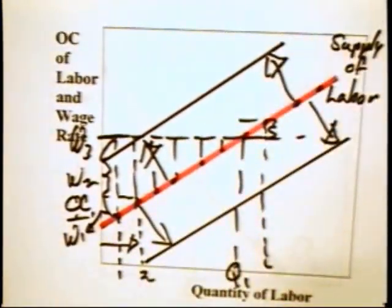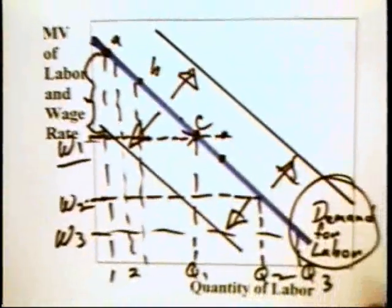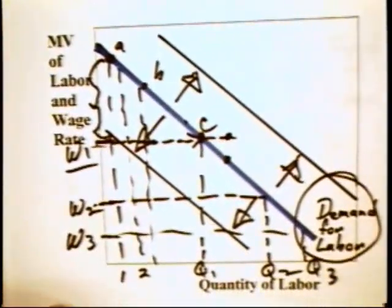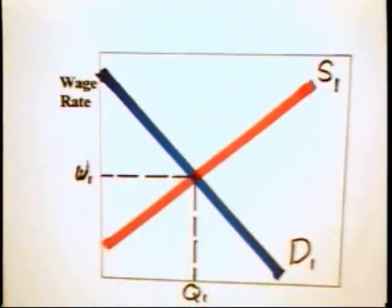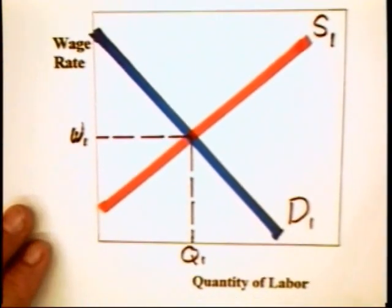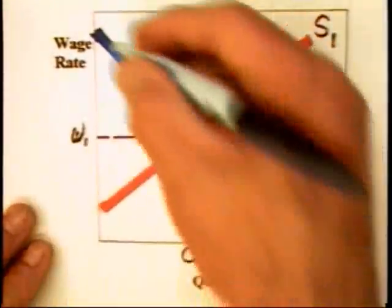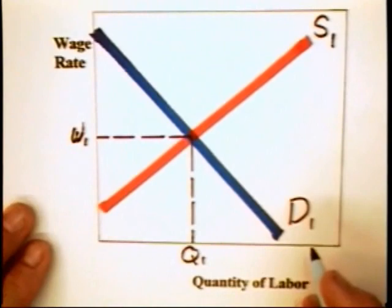Here we have the upward sloping supply curve, we've talked about the downward sloping demand curve, which gives us a graph that has become fairly standard here, where you have a downward sloping demand for labor, upward sloping supply curve.